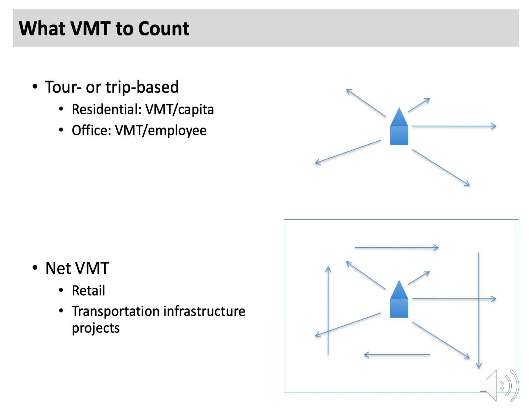Meanwhile, new retail development typically changes existing shopping travel patterns rather than creating brand new shopping trips. Sometimes new retail development provides a shopping option closer to residents and actually reduces driving overall. For this reason, for retail projects, assessing net VMT is the best approach. Net VMT is simply the change in VMT over the area where travel behavior is affected by the project — the difference in total VMT with and without the project.